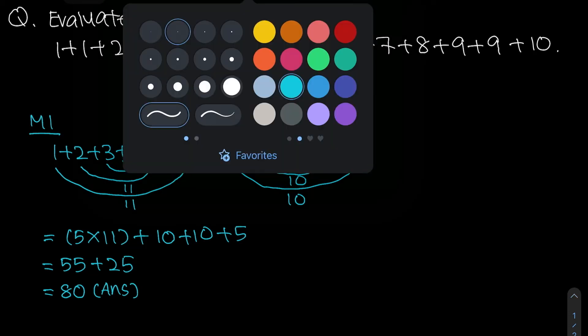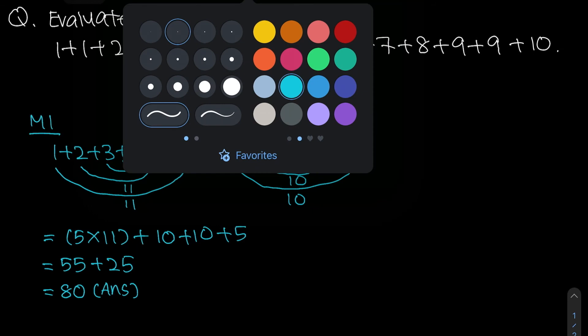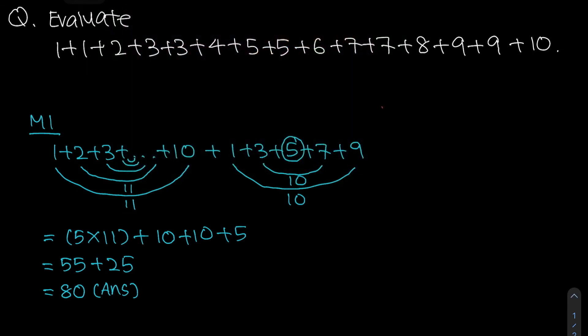Okay, so for method 2, I'm going to use a different color so that it's clearer for you to see. Okay, so for method 2, it is actually even shorter than that. Okay, you will notice that actually what you can do to this equation is to group up the numbers. Okay, group up to what numbers? We want to group them up to 10s.